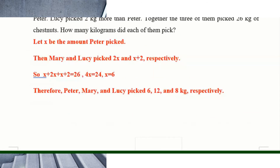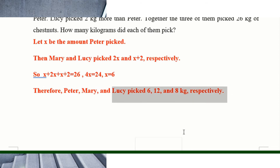Number eighteen: Marie, Peter, and Lucy were picking chestnuts. Mary picked twice as many as Peter, so Mary is 2x. Lucy picked 2 kg more than Peter, so Lucy is x plus 2. Set up the total equation and solve for x. Do it one by one and you'll find the respective values: Peter is 6, Mary is 12, and Lucy is 8 kg.